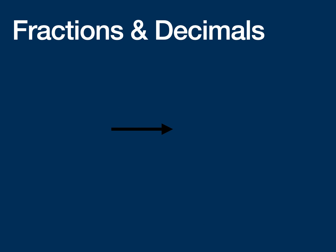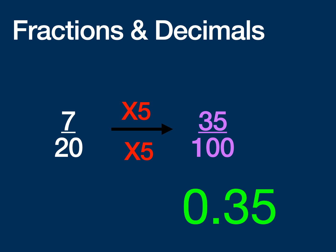Let's try something a little bit trickier. This time, it's 7 over 20. I really can't turn that easily into a 10. So I'm going to instead make it into 100. Well, I know that if I have 20 and I multiply that by 5, then I will get that 100 I'm looking for. So that means I also have to multiply the top by 5, and I'll end up with 35 over 100. And again, I know from my work earlier that this ends up being 0.35.